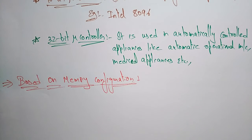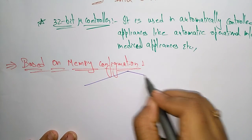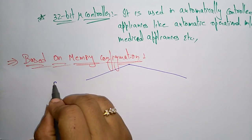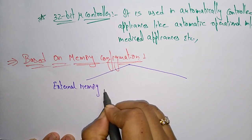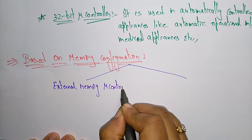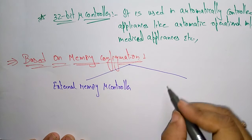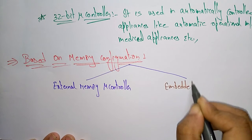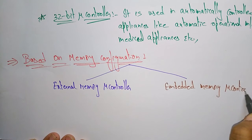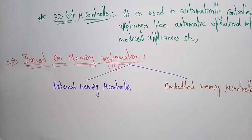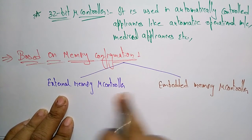Based on memory configuration, microcontrollers are divided into two categories: one is the external memory microcontroller, and the other is the embedded memory microcontroller.